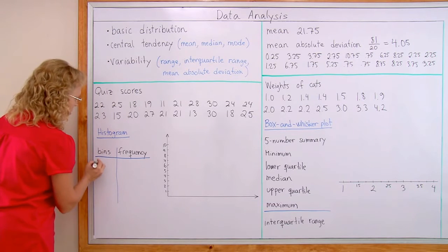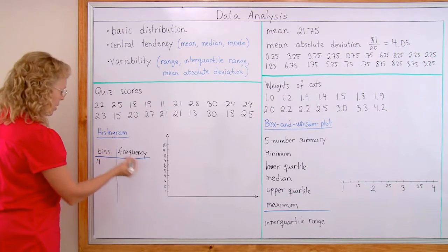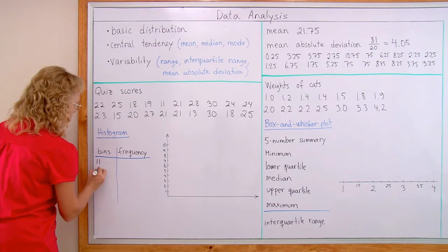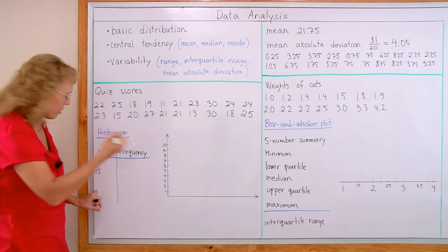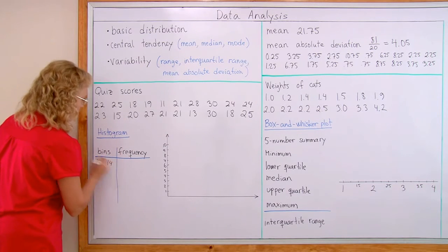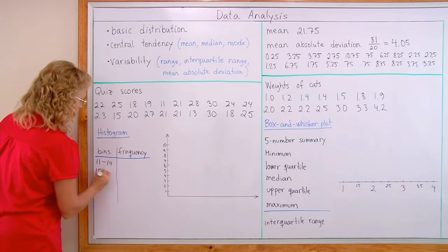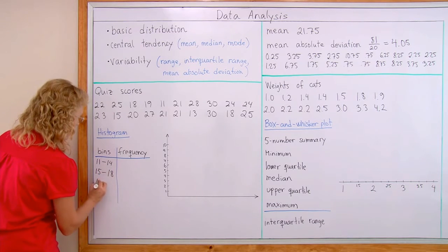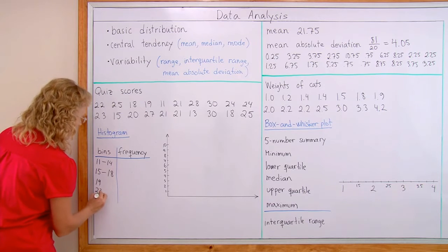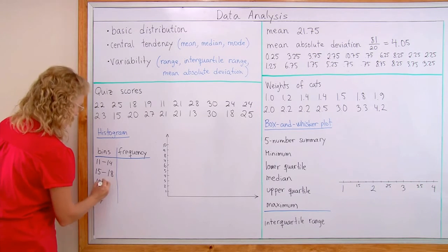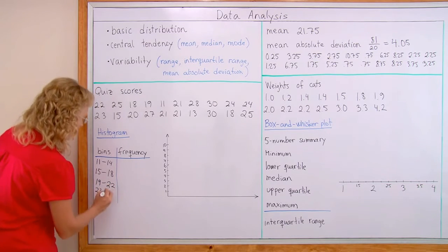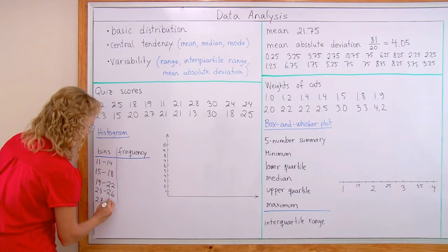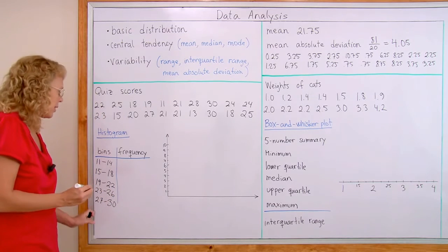So, my first bin is from 11 onward. The next one 4 points further, from 15 onward. So, 11 to 14, and then 15 to 18 and then here I have 19, 23 and 27. So this goes up to 22, this goes up to 26 and this up to 30. These are my bins.